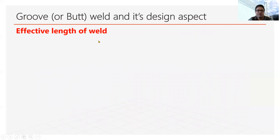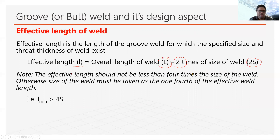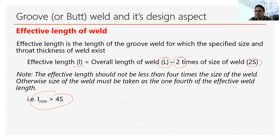Next is the effective length of weld — the same specifications from fillet weld apply here. The actual length may be L, but on both edges there is a taper, so we deduct about 2 times S. The minimum length of weld should be more than 4 times S; if it is less, we decrease S and take S as L/4.